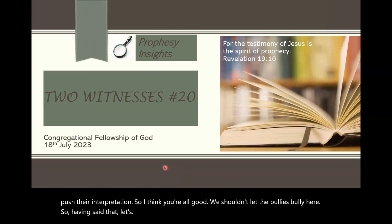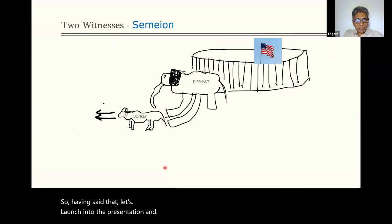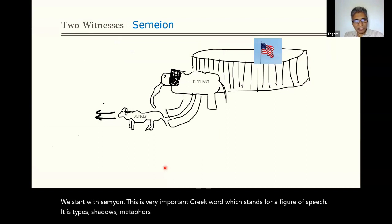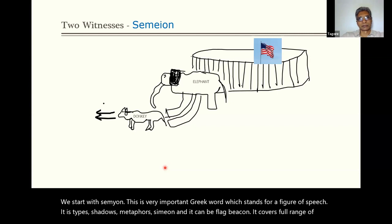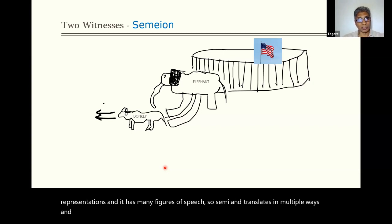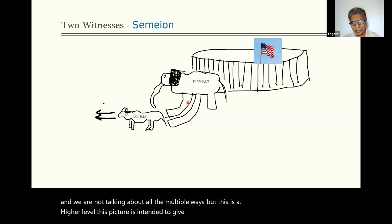Let's launch into the presentation. We start with 'semeion' — this is a very important Greek word which stands for figure of speech. It includes types, shadows, metaphors, and can mean flag or beacon. It covers a full range of representations and has many figures of speech. So semeion translates in multiple ways. This picture is intended to give you a basic understanding of semeion.